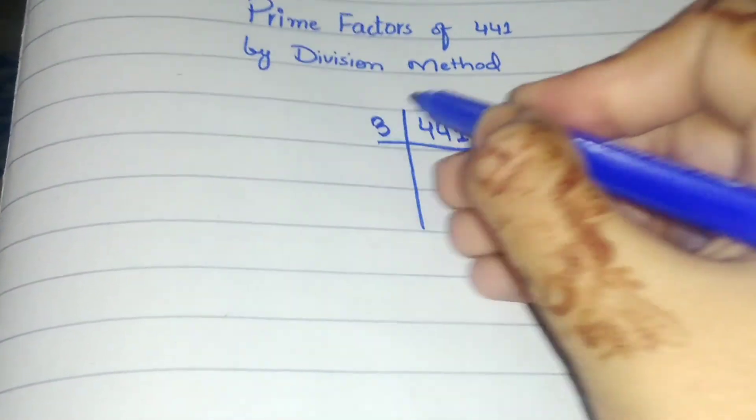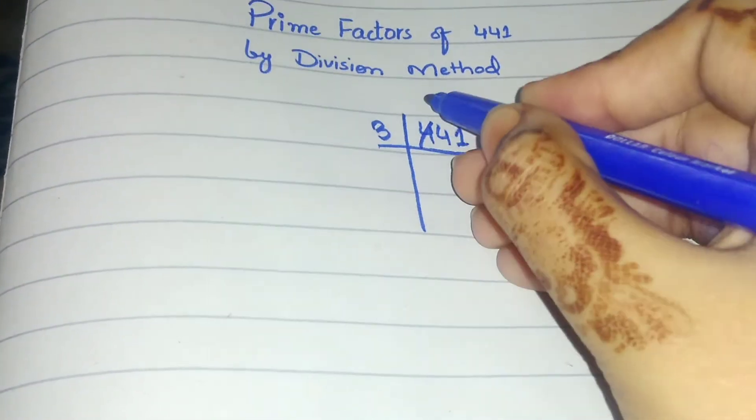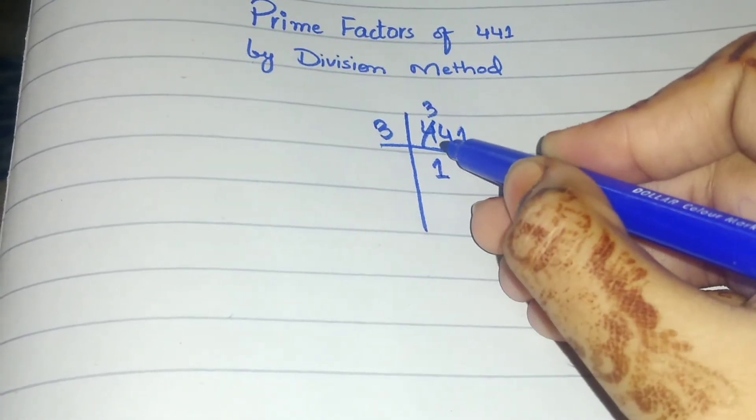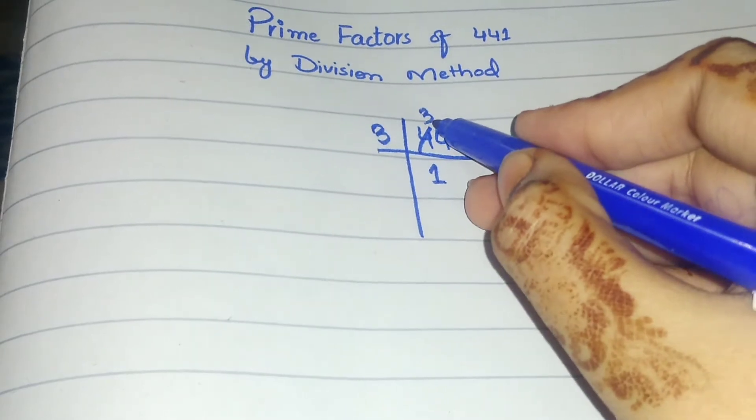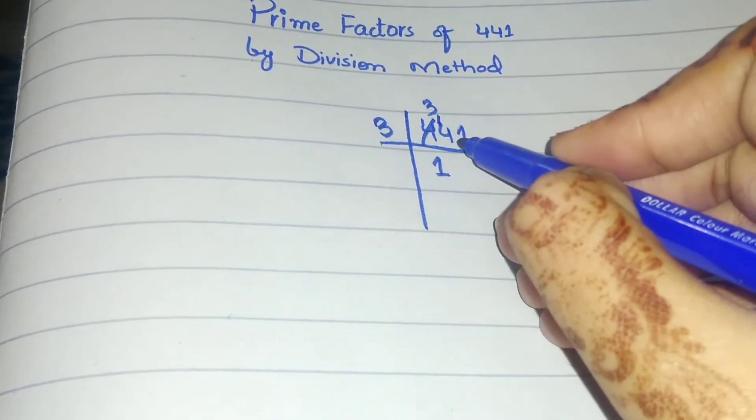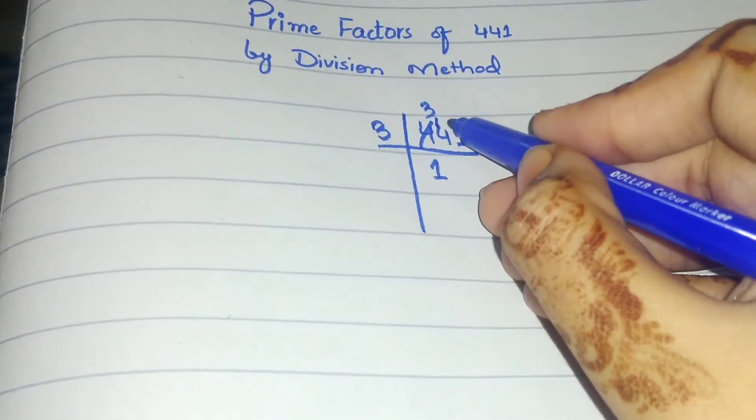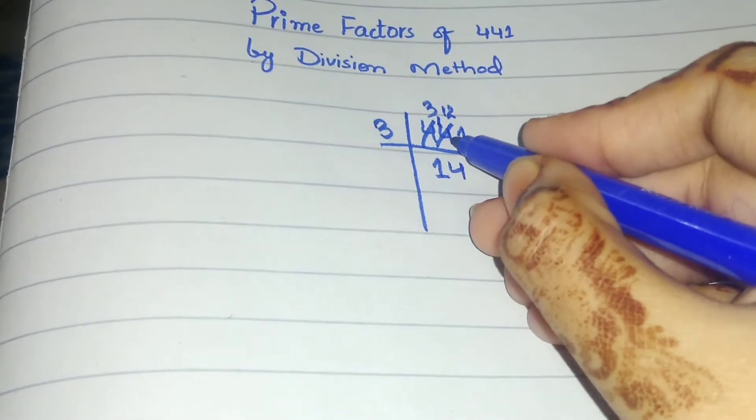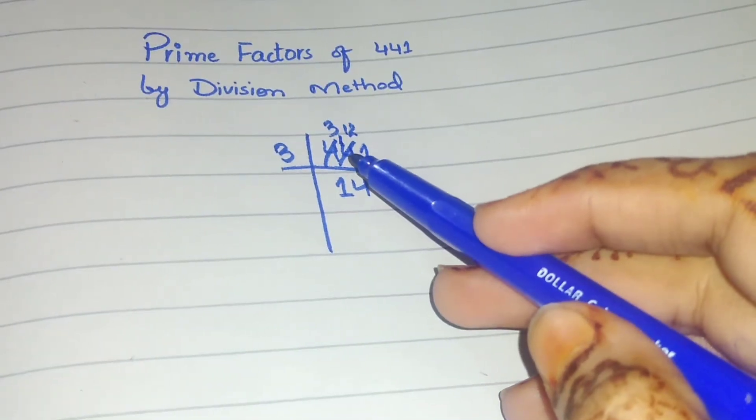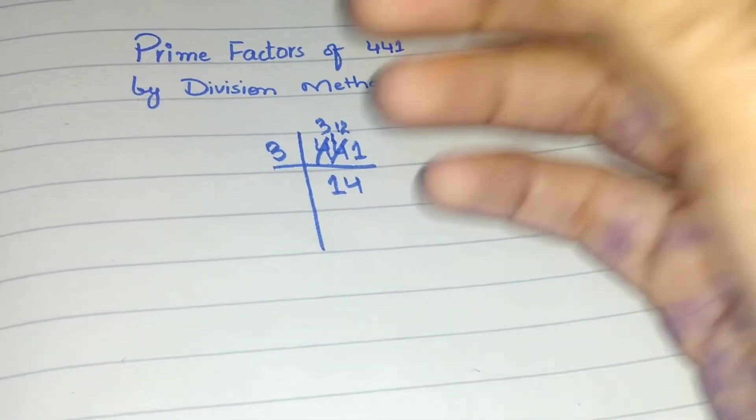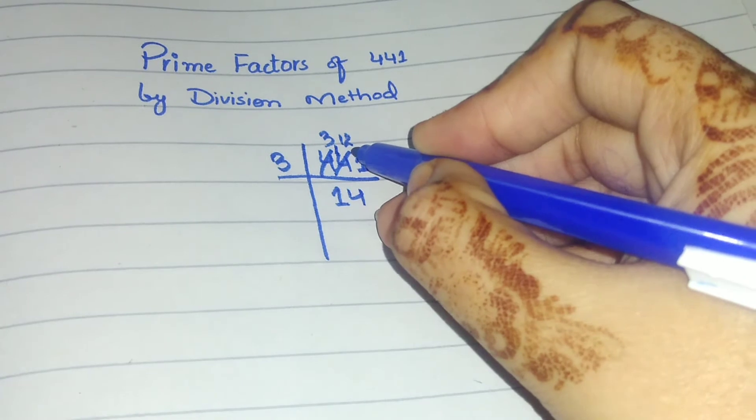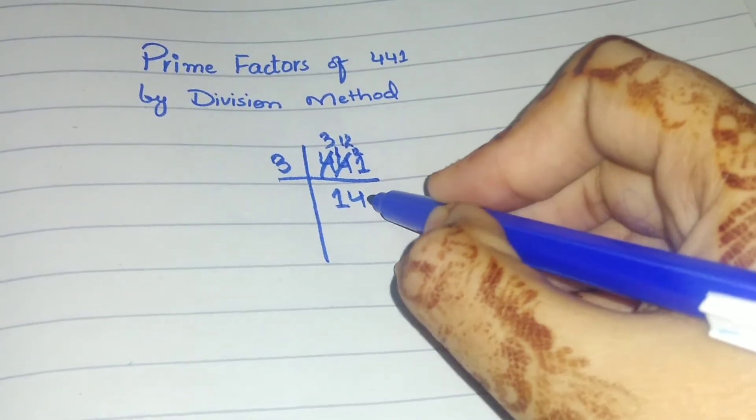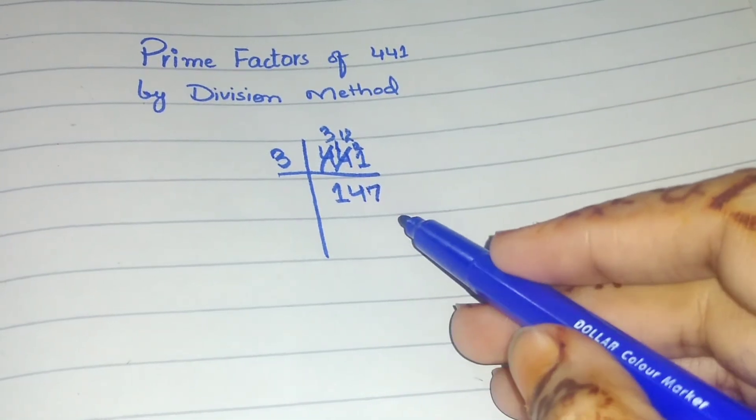In the 3 table, there is no 4, so we take 44. 3 times 14 is 42, with remainder 2. Bring down the 1 to make 21. 3 times 7 is 21. Now we have 147.